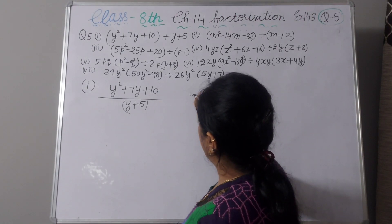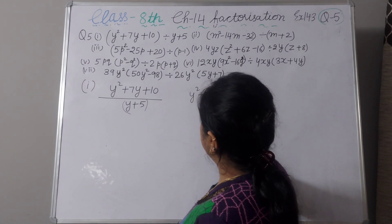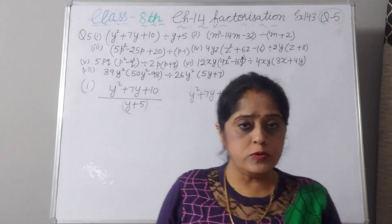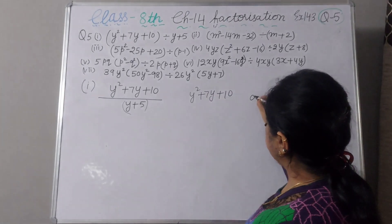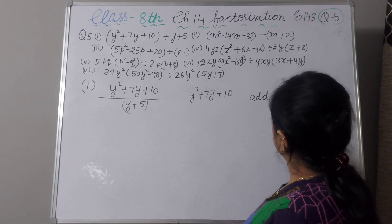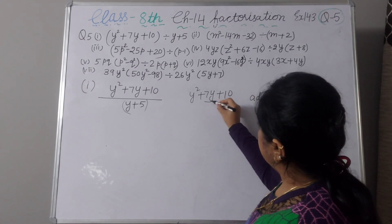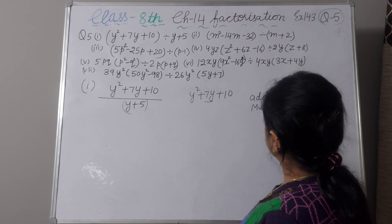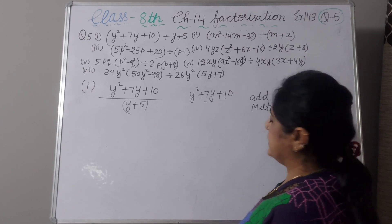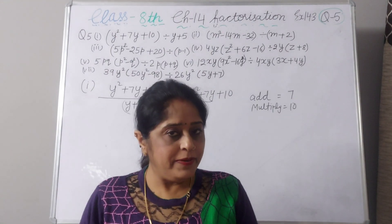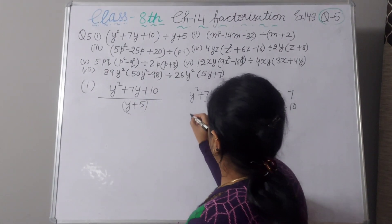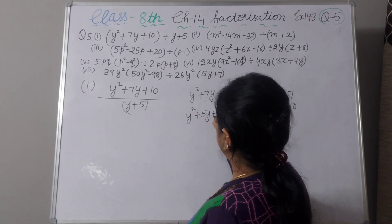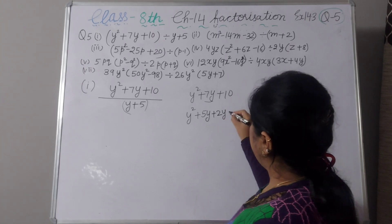First, we will solve y squared plus 7y plus 10. You have to think of two numbers: when we add them we get 7, and when we multiply we get 10. So the numbers are 5 and 2. We write: y squared plus 5y plus 2y plus 10.